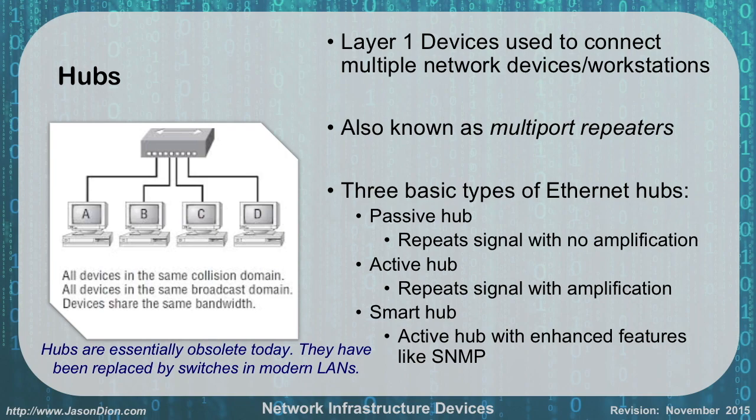Later on, they came up with a smart hub, which was an active hub that also had features like SNMP — Simple Network Management Protocol — for network monitoring. Even though it says smart hub, they're not that smart. Hubs in general are dumb repeaters that act at layer one. Whatever comes in goes straight back out. The only real difference is whether it amplifies the signal or not. Most hubs nowadays will have amplification, but hubs are pretty much obsolete today. They have been replaced by switches.